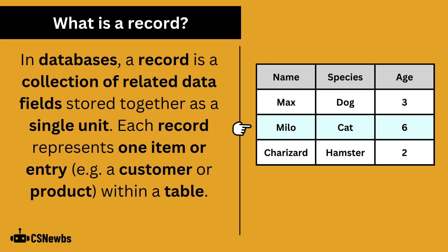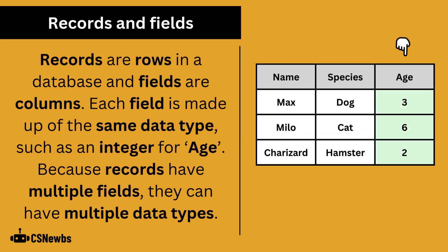In databases, a record is a collection of related data fields stored together as a single unit. Each record represents one item or entry, for example a customer or product within a table. Records are rows in a database and fields are columns. Each field is made up of the same data type, such as an integer for age. Because records have multiple fields, they can have multiple data types.